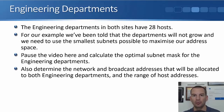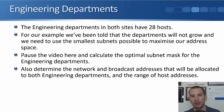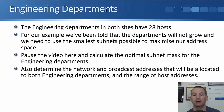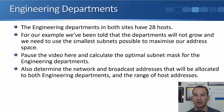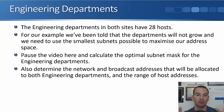For our example, the engineering departments in New York and Boston have 28 hosts each — those are the largest subnets required. The exam question says the departments will not grow and we need to use the smallest subnets possible to maximize available address space. So do not leave any room for future growth. Pause the video here and calculate the optimal subnet mask for the engineering departments — no bigger than necessary, but at least big enough to support 28 hosts. Then determine the network and broadcast addresses for both departments and the range of host addresses.